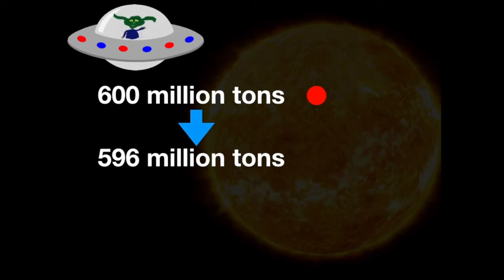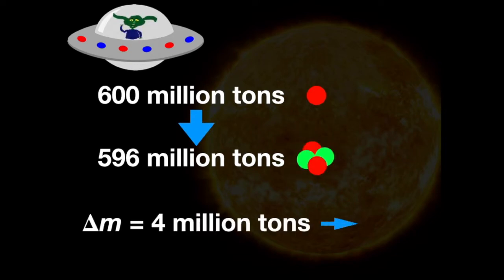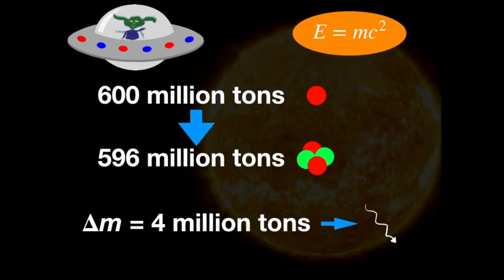Every second, 600 million tons of hydrogen is converted into 596 million tons of helium. The difference, 4 million tons, is released as energy given by E equals mc squared.